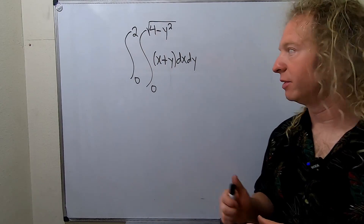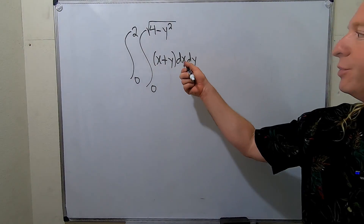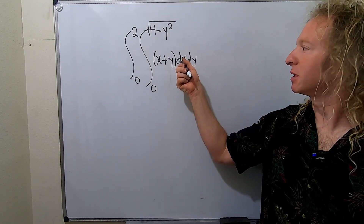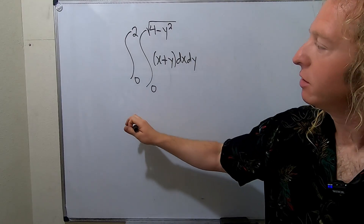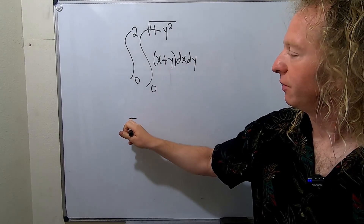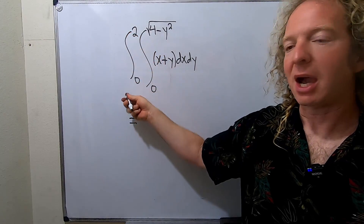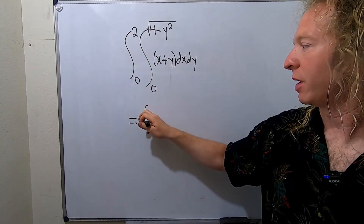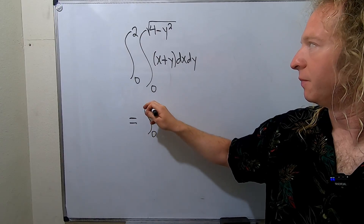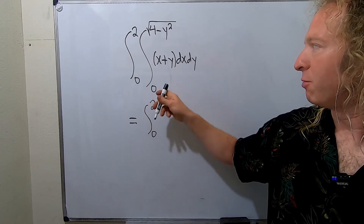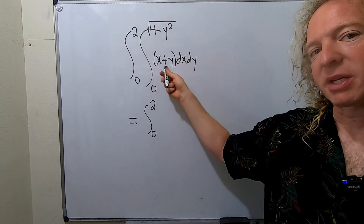In this video we're going to work out this integral. First we have to integrate with respect to X. This is equal to — keep the outer integral, write it again from 0 to 2 — and then perform the integration on the inner part with respect to X.